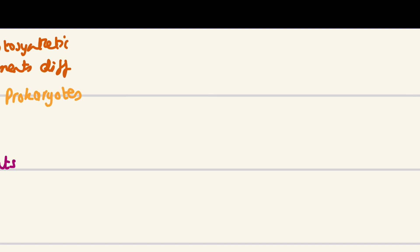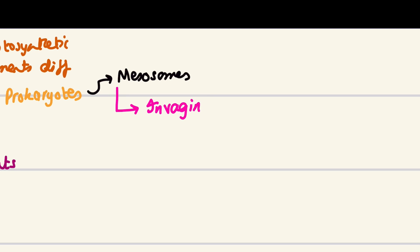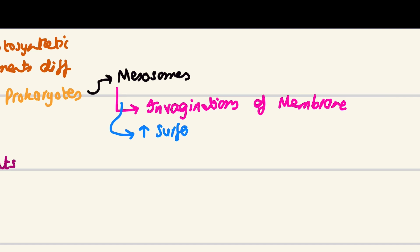Mesosomes are invaginations of the membrane, and they are really good for increasing surface area — they increase the surface area available for photosynthesis.